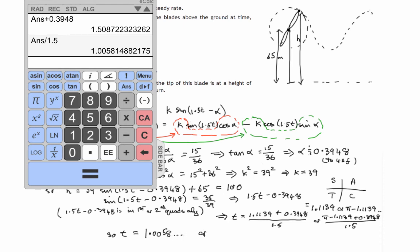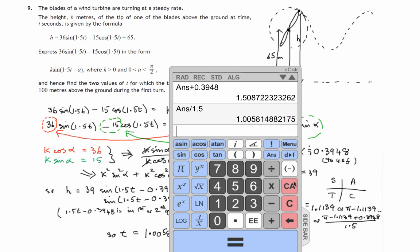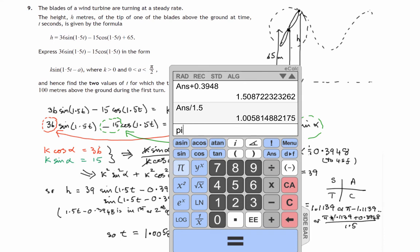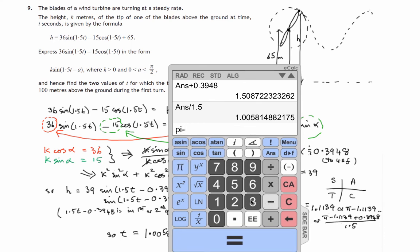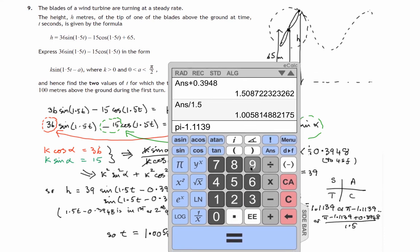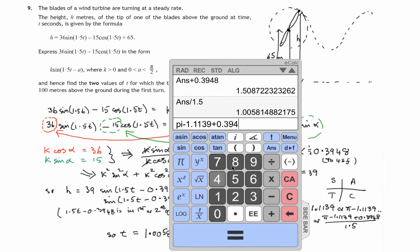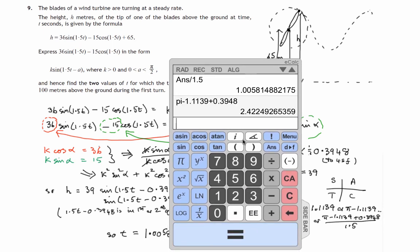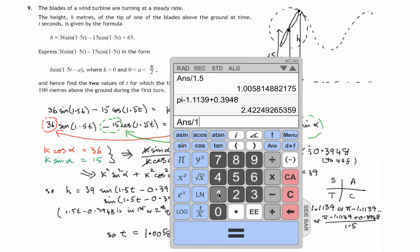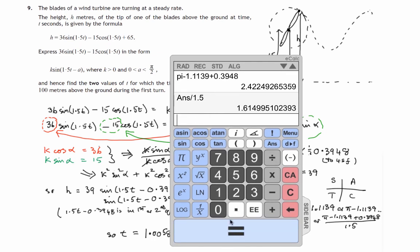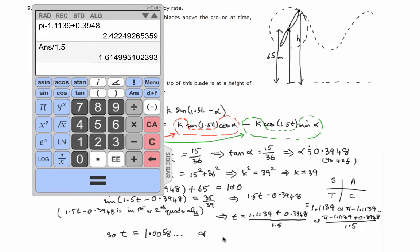For the second one, we'll take pi and subtract 1.1139, then add 0.3948, and whatever that comes to we'll divide by 1.5. So we get 1.6149 and so on.